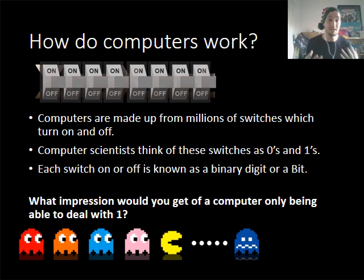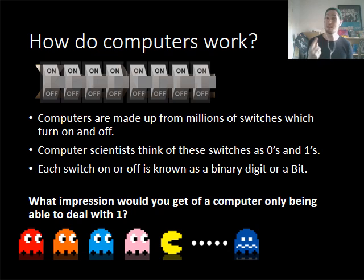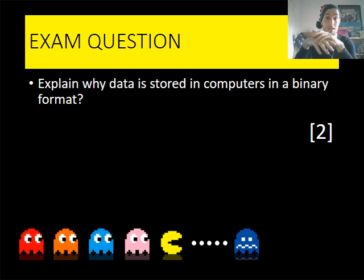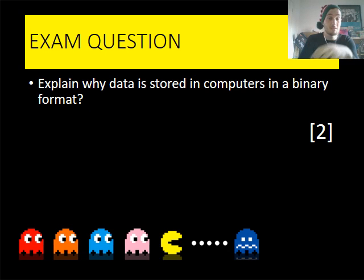With this in mind, the impression you can get from computer systems is that computers are very stupid and that they can only use ones or zeros. Moving on, this is the type of exam question that you would get in a GCSE computing syllabus. You need to be able to explain why data is stored in a computer in a binary format.